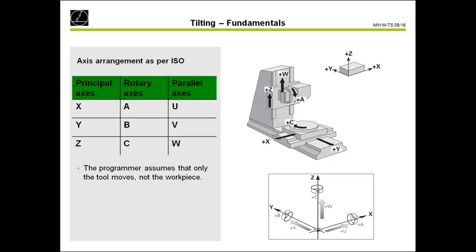Also very important — like in basic training — we are always programming the tool. We are not programming the movement of the workpiece; we are only programming the tool. We are not looking at our machine, whether there is a table, whether the table is moving the workpiece or the head is moving the tool. That's very important, especially for customers who have a table machine, because they often want to move the workpiece. But this is not the correct way. You always program the tool, and the workpiece will not do any movement.